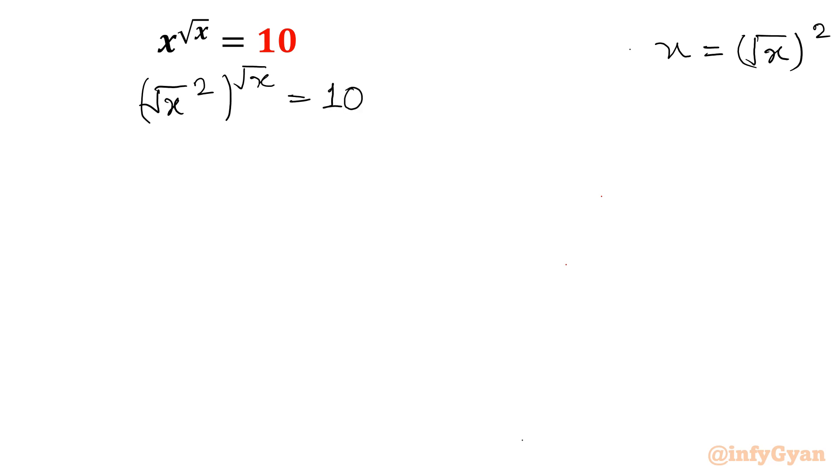Now, the exponent rule which is very powerful. I will write a power b whole power c can be written as a power bc. Now our equation will convert: root x, square root x power 2 root x equals 10. That exponent will get multiplied.